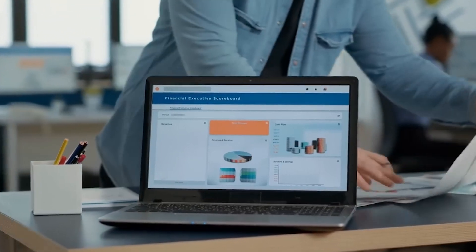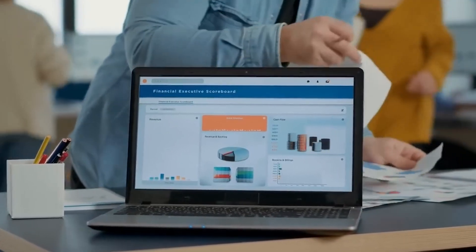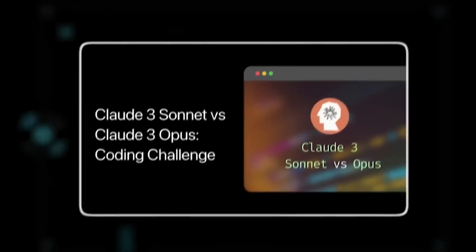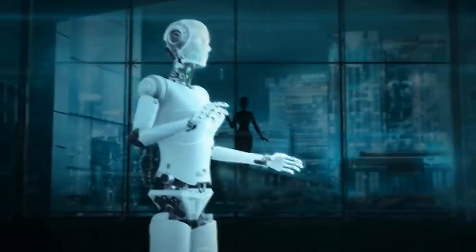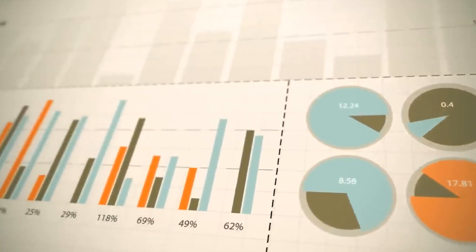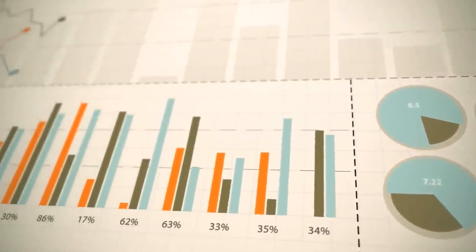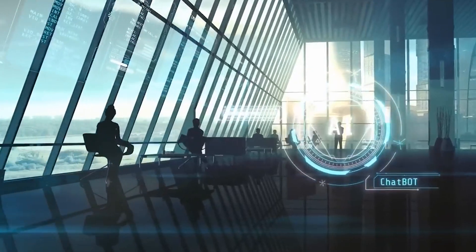Haiku understands requests more clearly, knows when a request could cause harm, and is less likely to refuse an answer to a harmless question. CLOT3 Haiku is a fast, affordable, and smart AI model that's good at understanding and answering questions quickly. It can understand different types of information, like text and images. And it's getting better all the time.